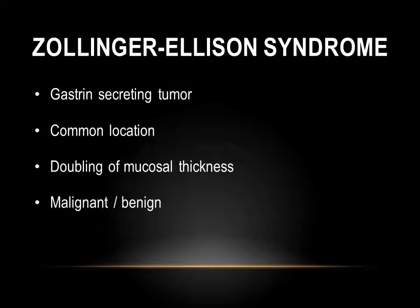Zollinger-Ellison syndrome is basically a gastrin-secreting tumor very commonly found in the small intestine and, to a lesser extent, in the pancreas; it can also involve the stomach mucosa. One very important feature is the thickening or doubling of the mucosal thickness, and it can result in hyperplasia of the mucous neck cells. More than 60 to 90 percent of gastrinomas are malignant, while about 25 percent are associated with multiple endocrine neoplasia type 1 and are usually benign.